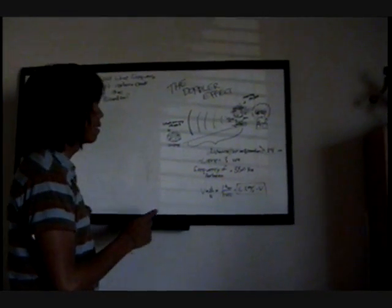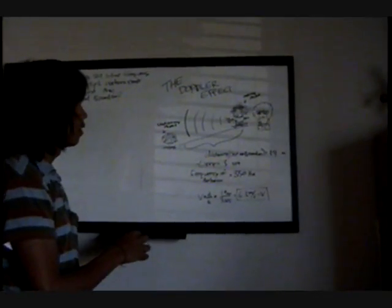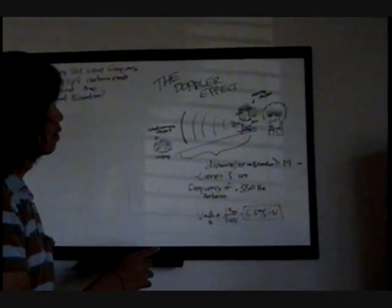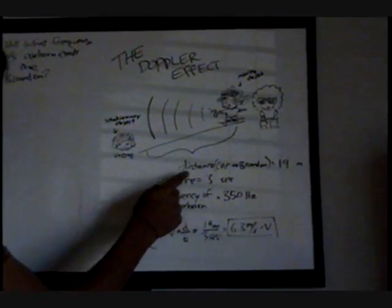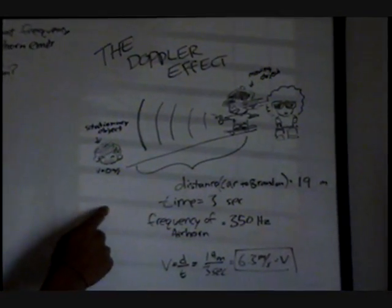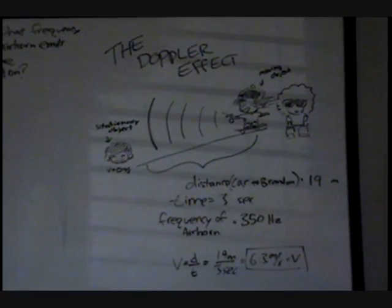So what just happened is the basic example of the Doppler effect. Here is a clear image of what just happened. Philip, the moving object, is approaching me, stationary object, while blowing an air horn with a frequency of 350 hertz.